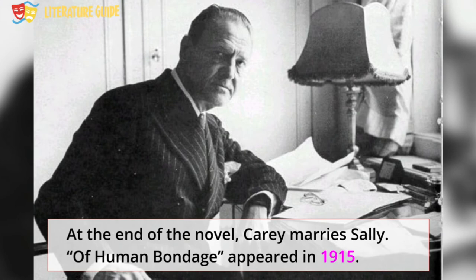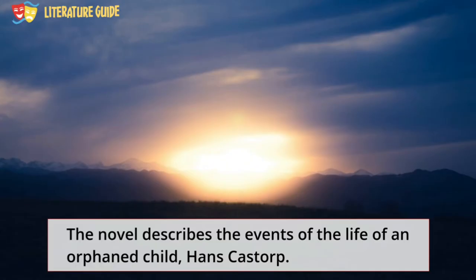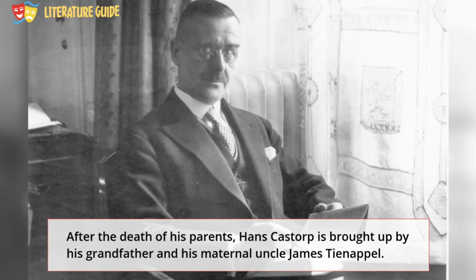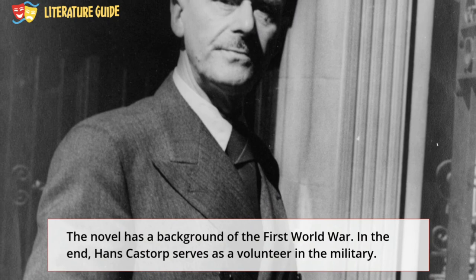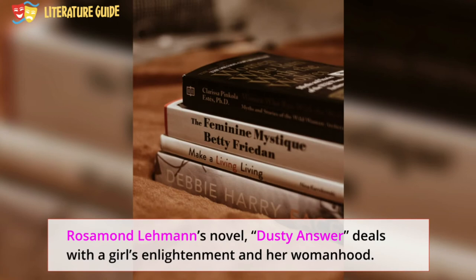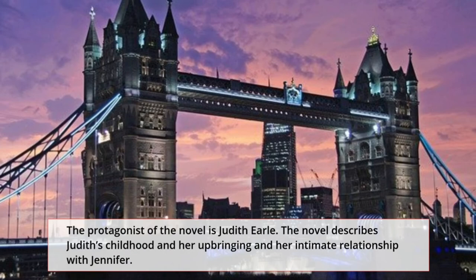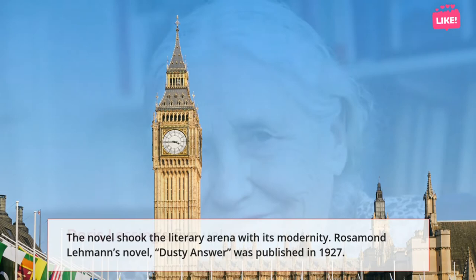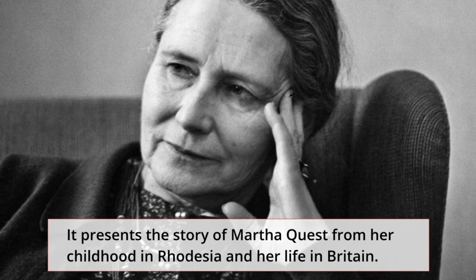Thomas Mann, a German novelist, produced his Bildungsroman Der Zauberberg (The Magic Mountain) in 1924. The novel describes the events of the life of an orphan child Hans Castorp. After the death of his parents, Hans Castorp is brought up by his grandfather and his maternal uncle. The novel has a background of the First World War, and in the end Hans Castorp serves as a volunteer in the military. Rosamund Lehmann's novel Dusty Answer deals with a girl's enlightenment and her womanhood. The protagonist is Judith Earle, and the novel describes Judith's childhood, her upbringing, and her intimate relationship with Jennifer. The novel shook the literary arena with its modernity and was published in 1927. Doris Lessing's five-volume novel Children of Violence was published in 1952, presenting the story of Martha Quest from her childhood in Rhodesia and her life in Britain.